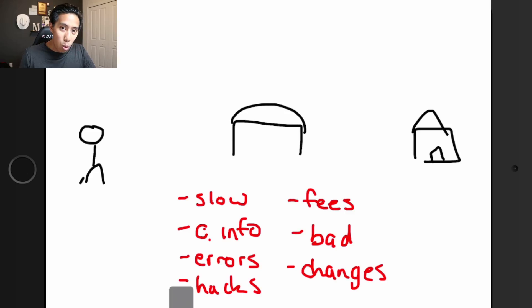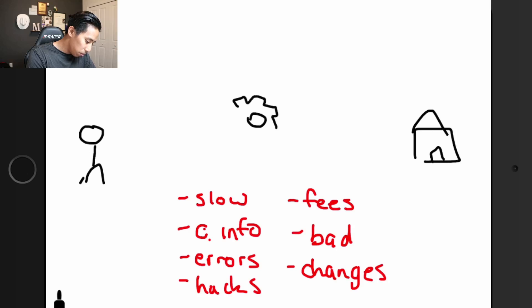So for you to buy this house, there's a ton of stuff that can happen and go wrong. And it's slow and it's expensive and there's changes. It's just so bad. Now what a smart contract does is it replaces this third party with a calculator or rather like a protocol on the blockchain.